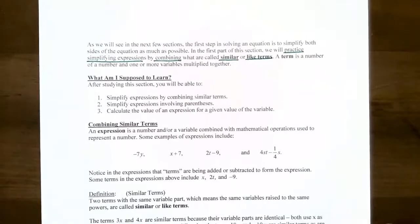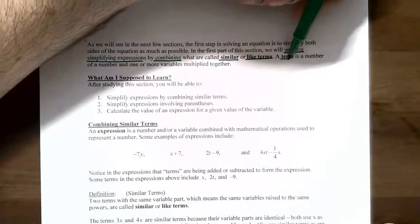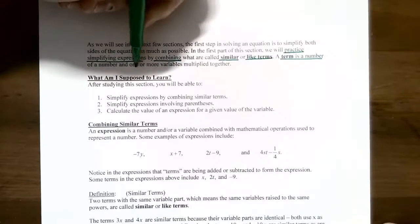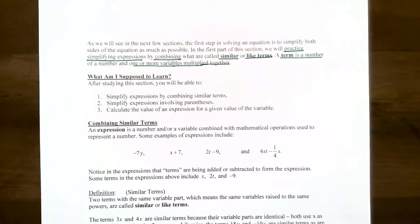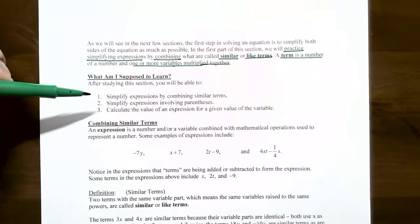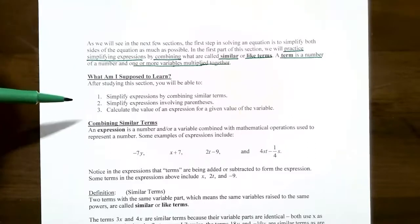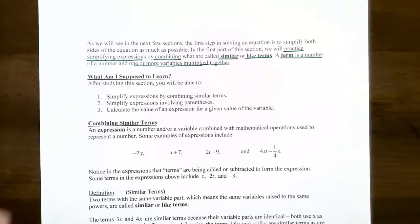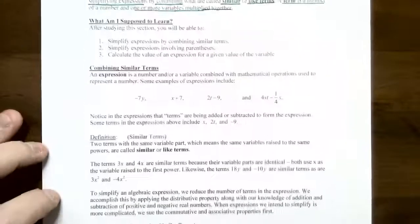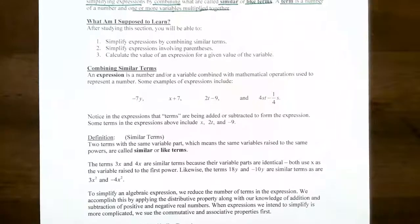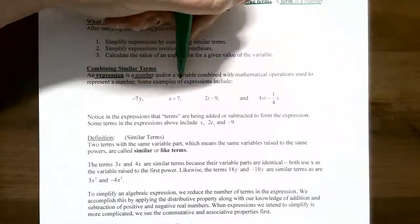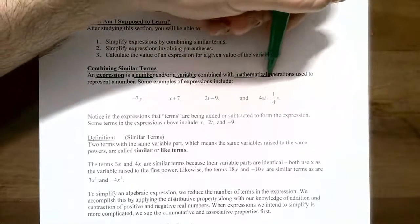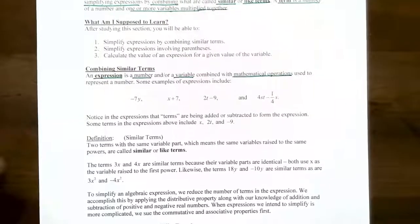A term in math is a number and one or more variables multiplied together. In this video we're going to learn how to simplify expressions by combining similar terms, how to simplify expressions involving parentheses, and also how to calculate the value of an expression for a given value of a variable. An expression is a number and/or a variable combined with some mathematical operation or operations used to represent an unknown number.